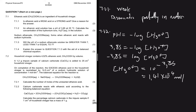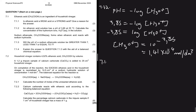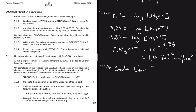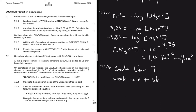7.1.3: Sodium ethanoate (CH₃COONa) forms when ethanoic acid reacts with sodium hydroxide. Will the pH of a sodium ethanoate solution be greater than 7, less than 7, or equal to 7? It's definitely going to be greater than 7. Ethanoic acid is a weak acid combined with sodium hydroxide, which is a strong base — weak acid plus strong base gives a basic solution, pH greater than 7. If instead you had a strong acid with a weak base, the pH would be less than 7.